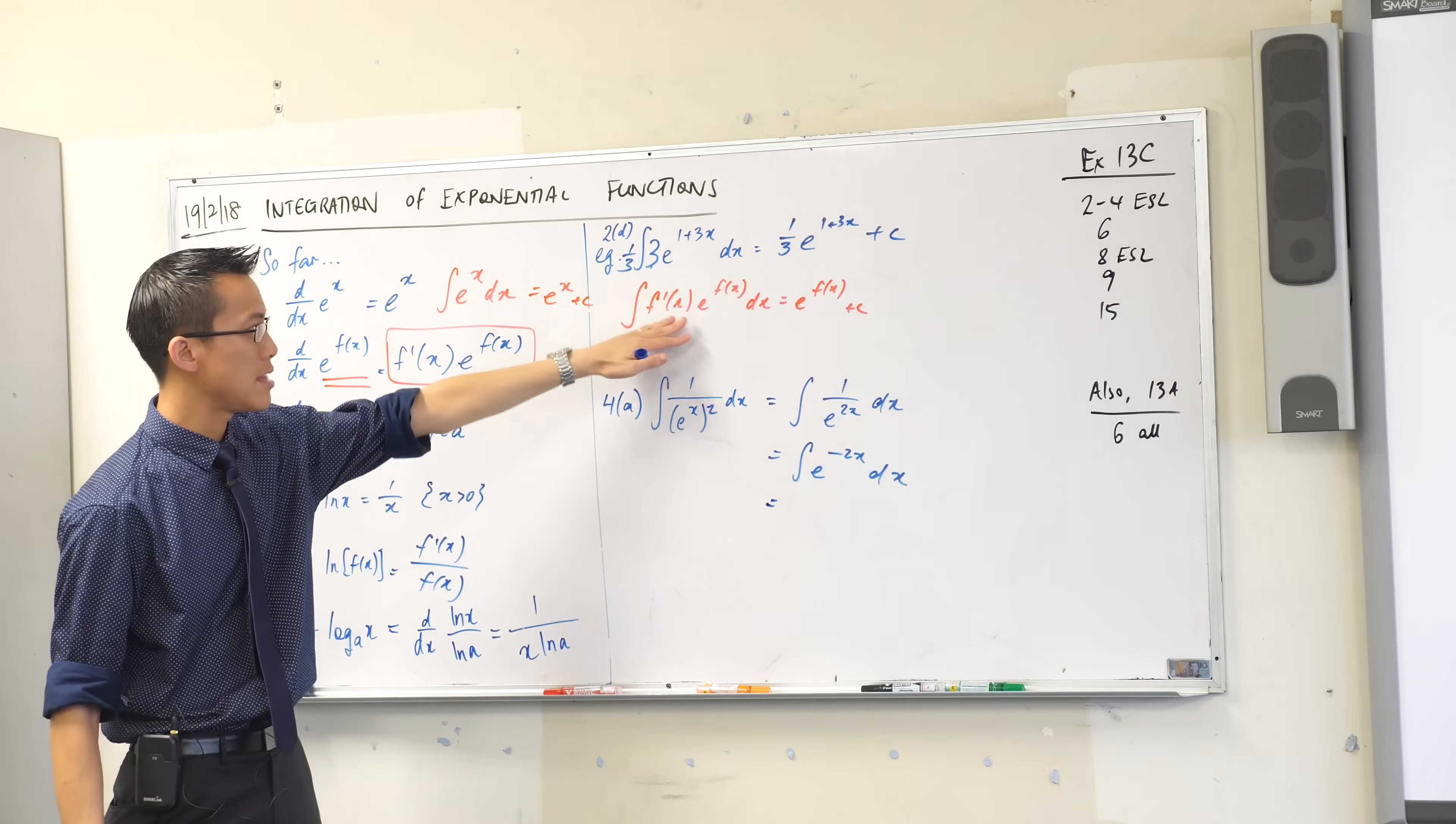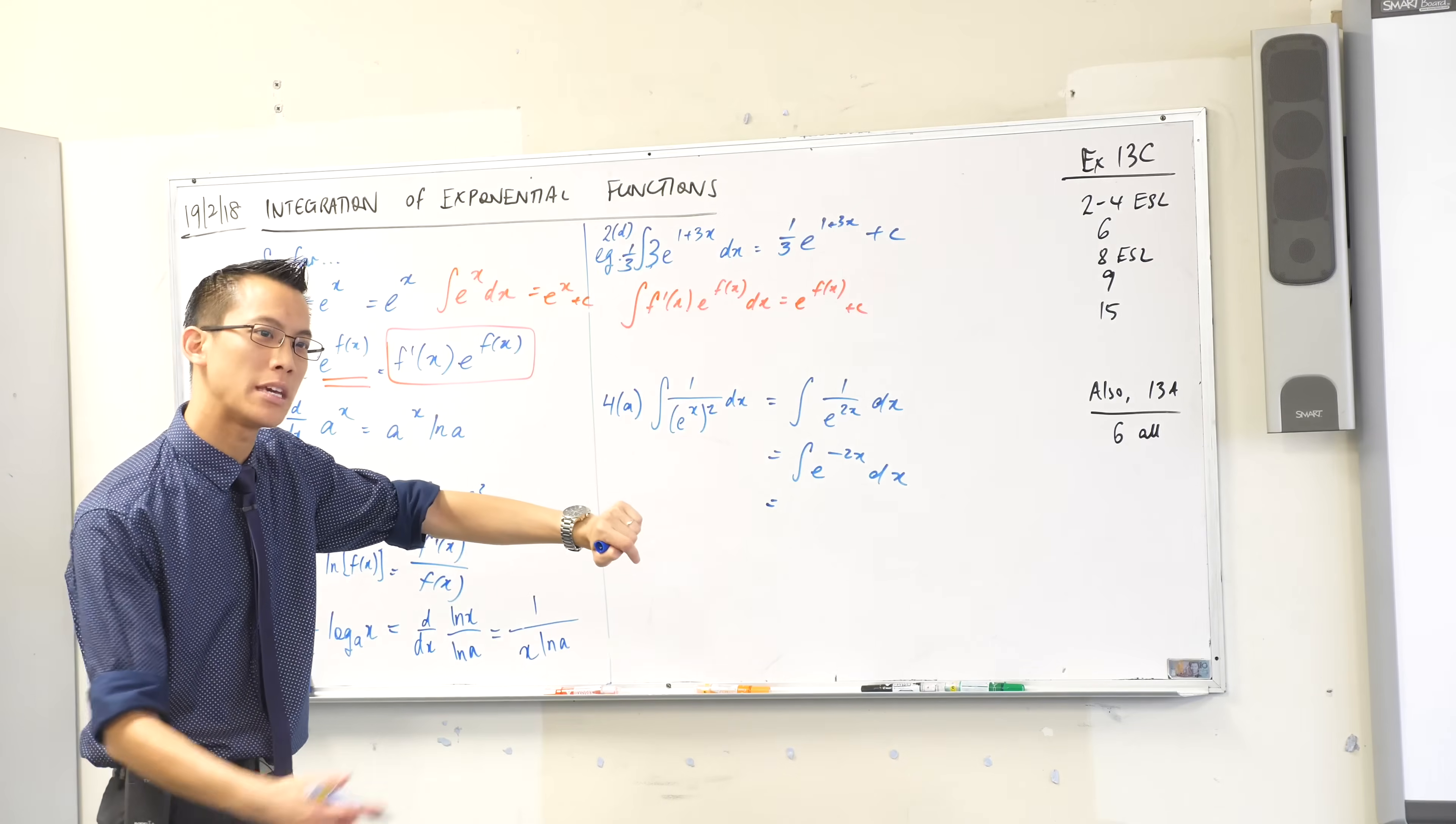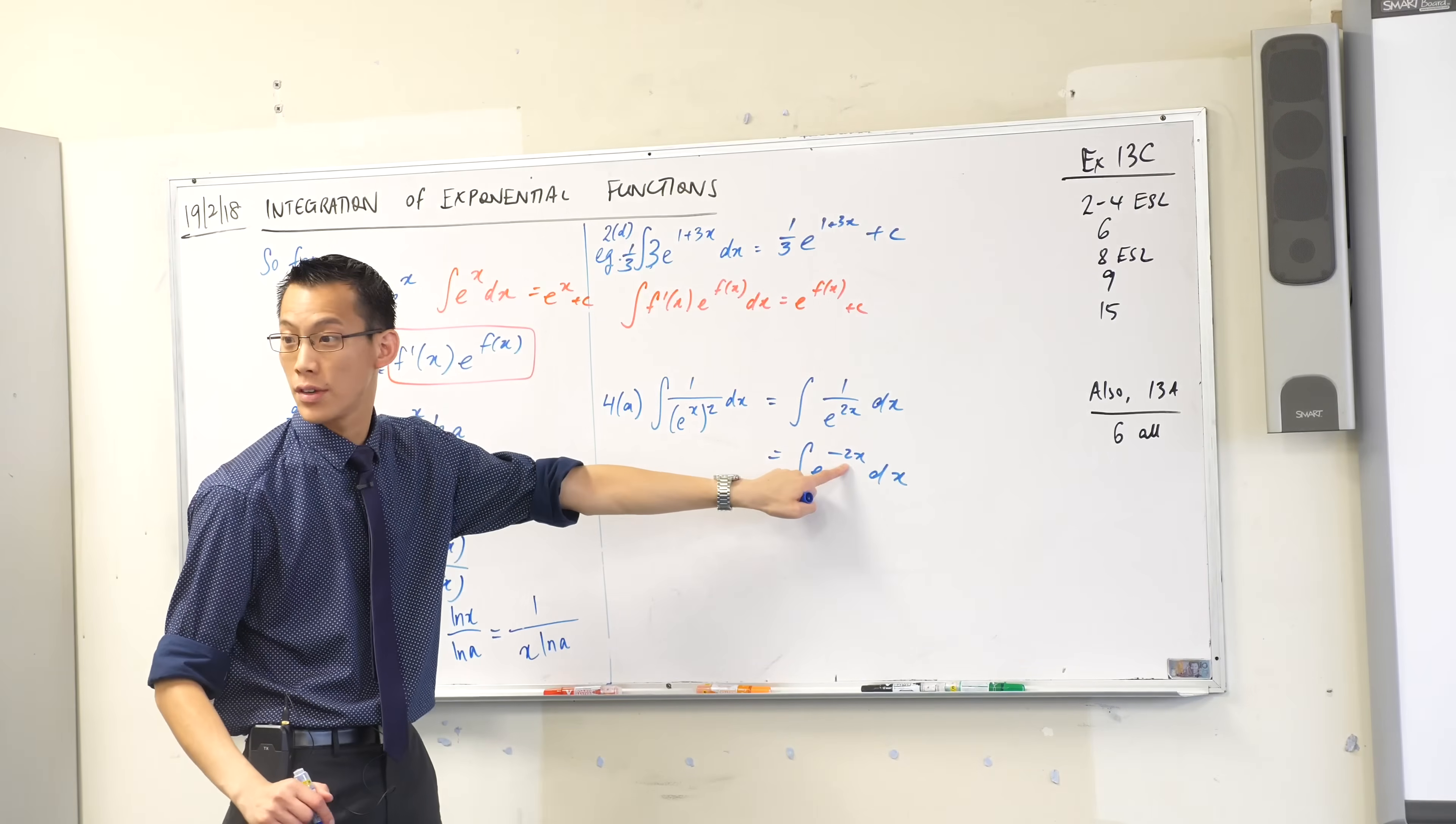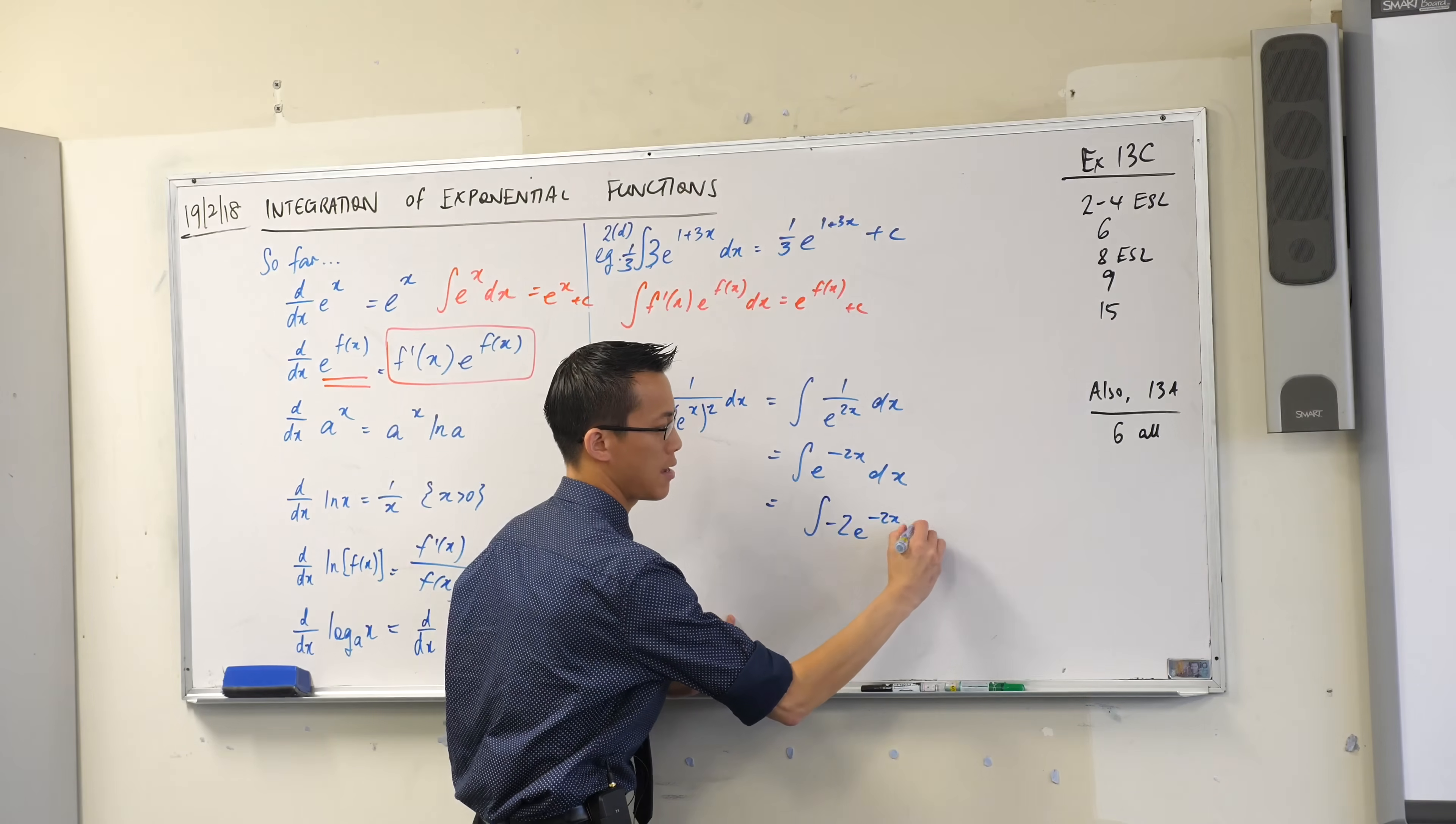I'm still not quite there yet, this is not in this form. I've got e to the f but I've got no f dash so what would f dash be in this case? Yeah, negative 2, there's the derivative.